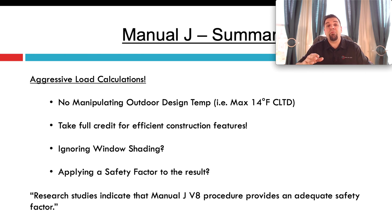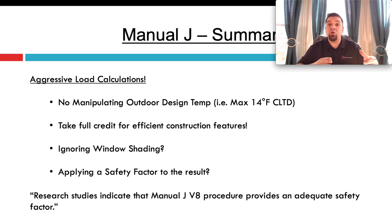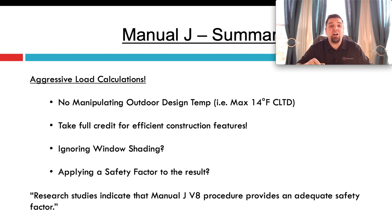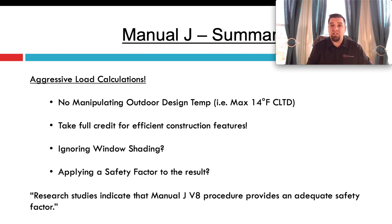Always make sure you take full credit for efficient construction features like overhangs. Don't ignore window shading — if you enter windows and doors that have shades but enter them as no shading, it really could impact the load across all windows on every floor. And don't apply any sort of safety factor to the result. There's already so much rounding in the software. Hank Rakowski, who wrote Manual J, said that rounding — because it has to stop at a certain decimal point — already includes almost 20% oversizing in the software alone.